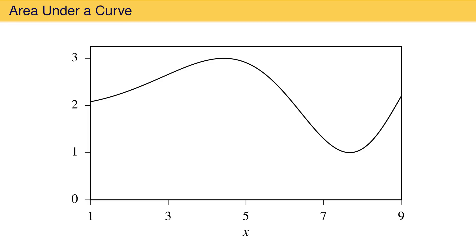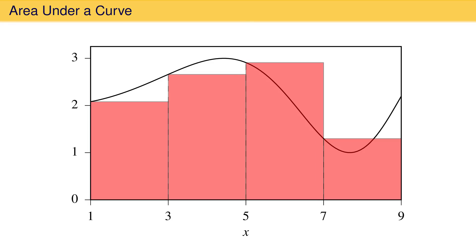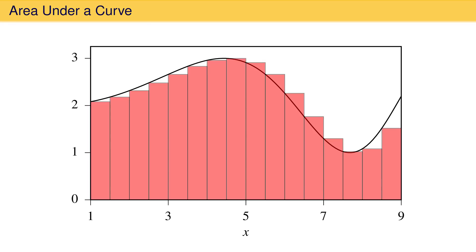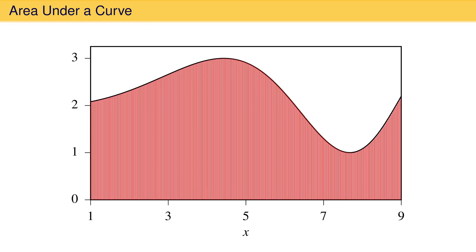We could do this differently by placing rectangles into the four segments such that the left edge of each rectangle touches the curve. We could then double the number of rectangles once, twice, three times, four times, five times, and six times. The result is the same: a bunch of rectangles that fit under the curve fairly well and that provide a decent estimate of the area under the curve when the area of all 256 rectangles is summed.